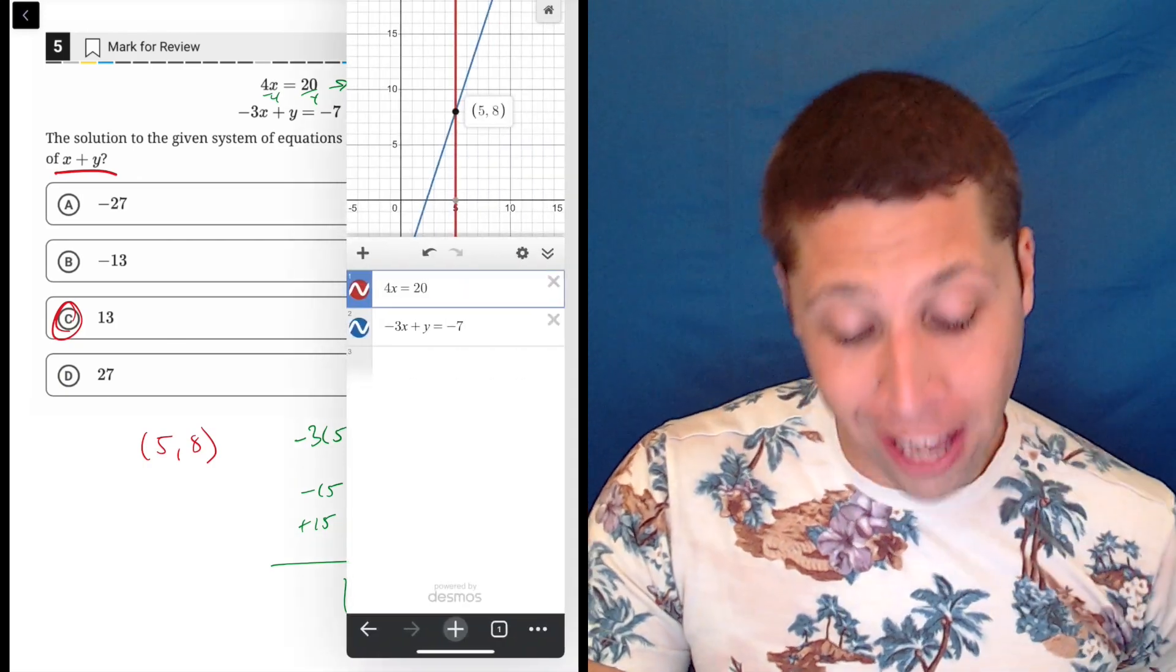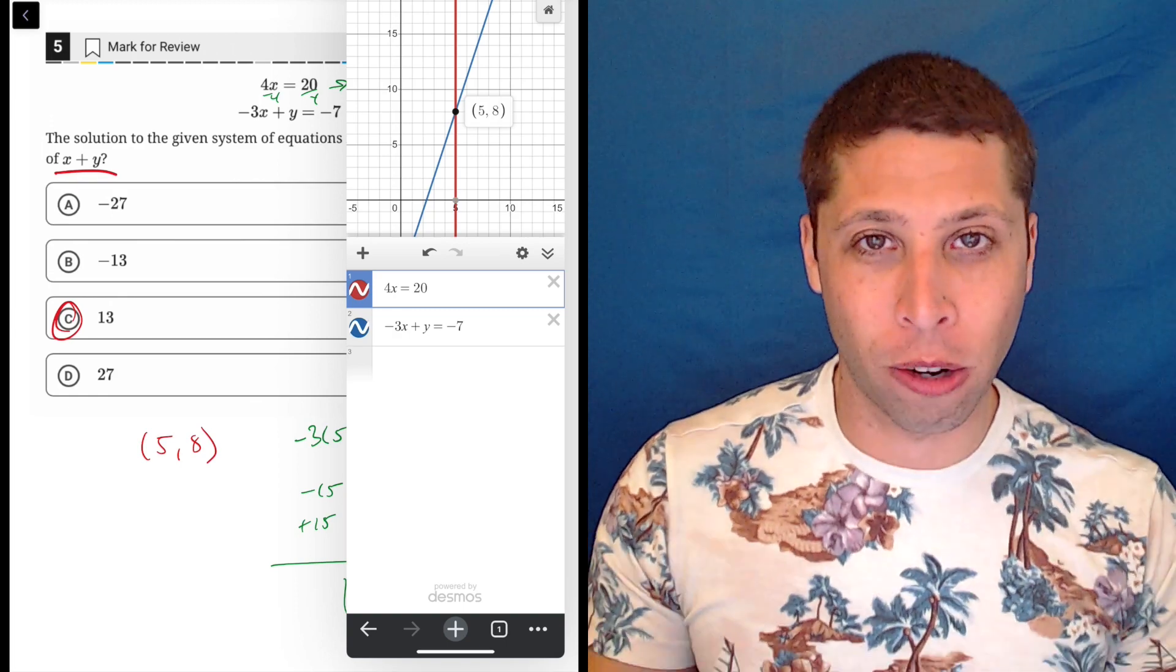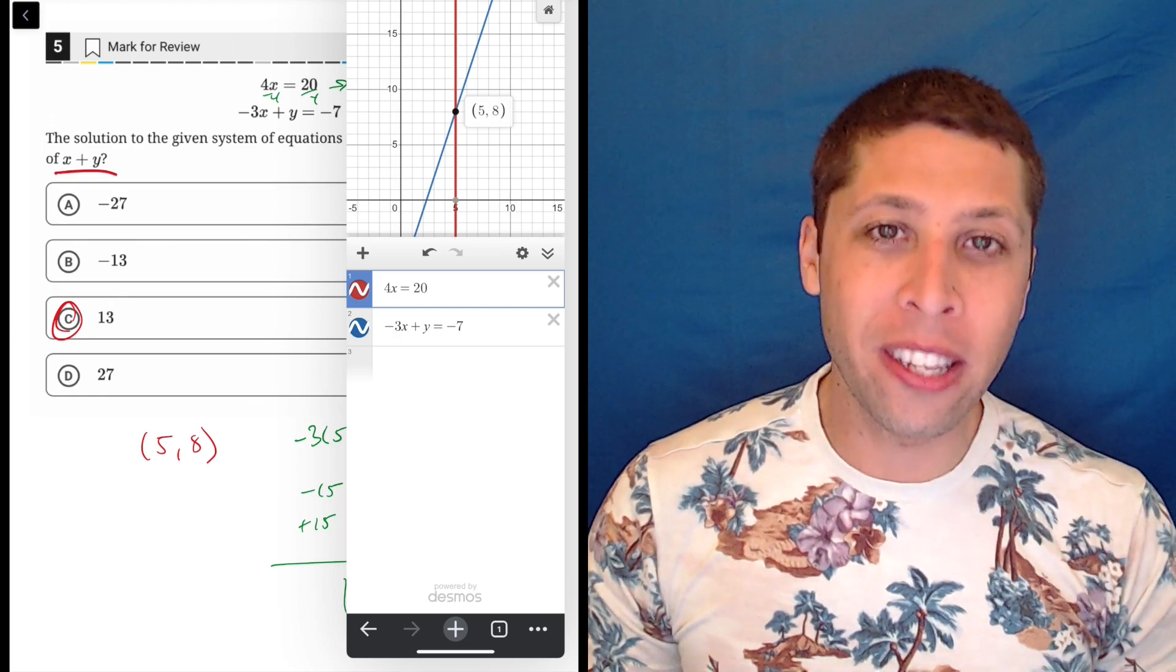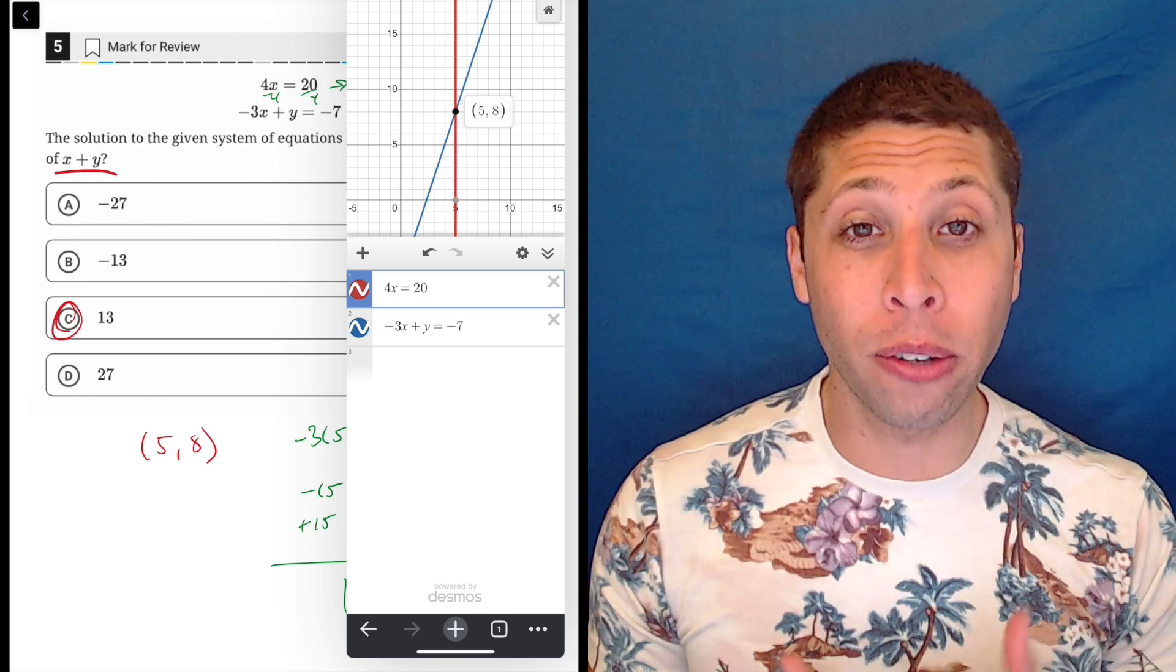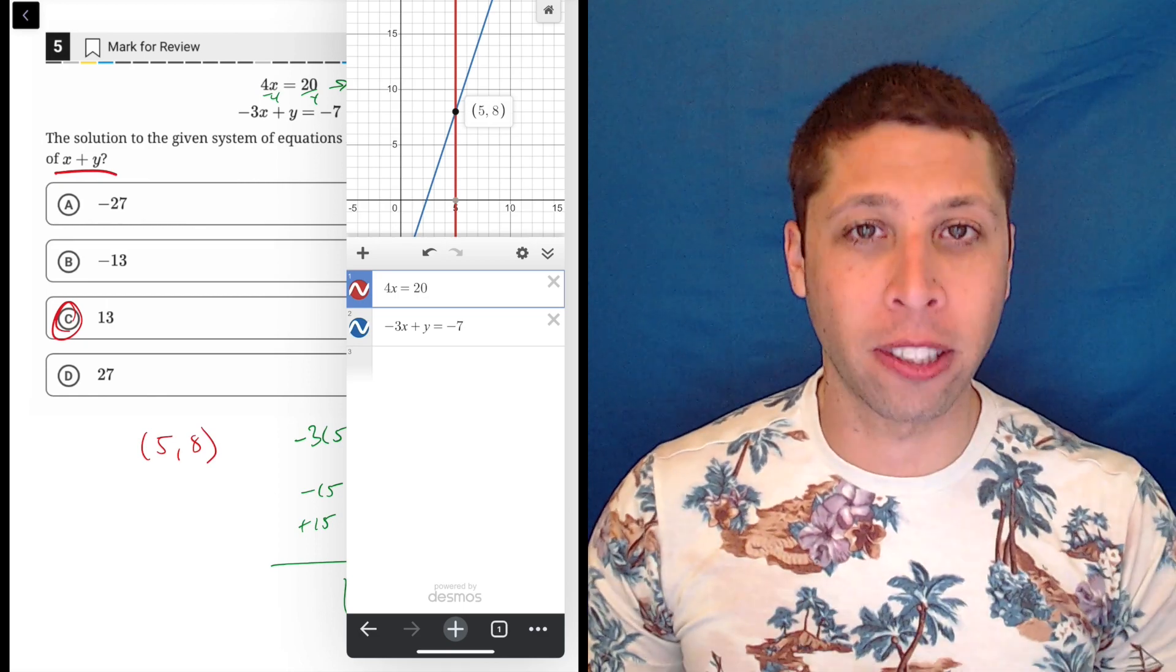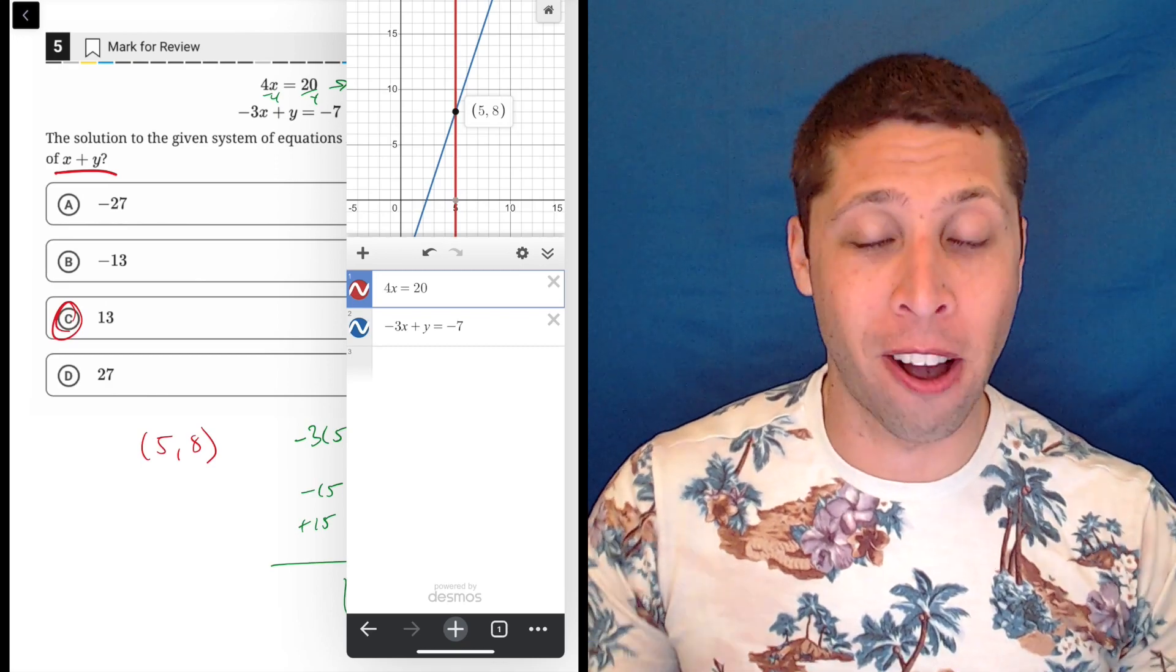So if you just graph it, the calculator is not going to lose a negative as long as you enter the equations correctly. So please, when you see these opportunities, these systems of equations, we're pretty much never going to do those by hand. We're going to let the calculator solve it for us, tap a little point, and that's it. Free points on the test.